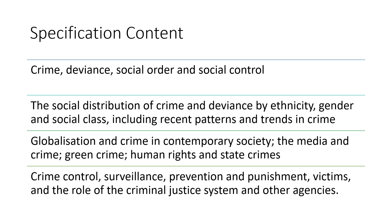Let's look at the specification content for crime and deviance — four spec points. The first is crime, deviance, social order and social control. It's fairly non-specific, but essentially covers theoretical views of crime: functionalist views, Marxist, neo-Marxist, left realist, right realist, labelling theory, and interactionism on crime.